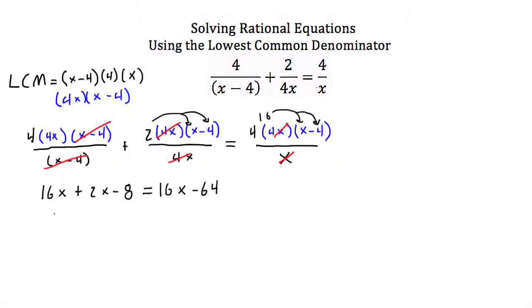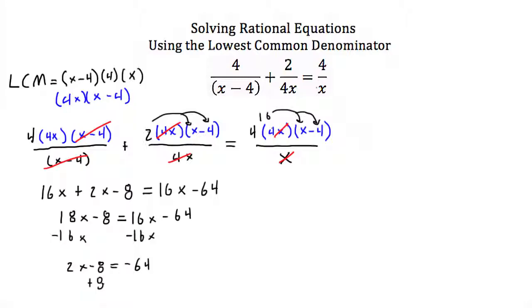Next I combine like terms. I have 16x and 2x on the left side, giving 18x minus 8. The right-hand side stays as 16x minus 64. Subtracting 16x from both sides leaves 2x minus 8 equal to negative 64. Adding 8 to both sides gives 2x equal to negative 56. Dividing both sides by 2, we get x equal to negative 28.